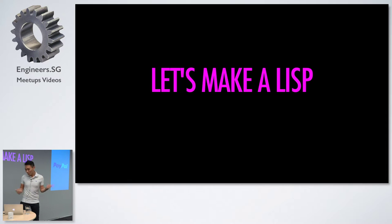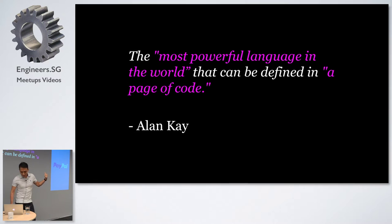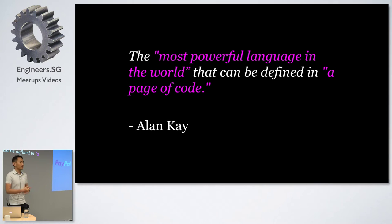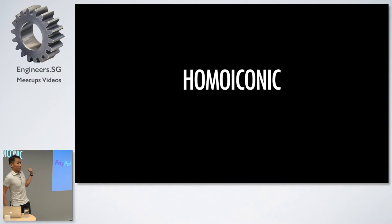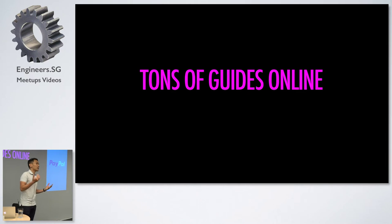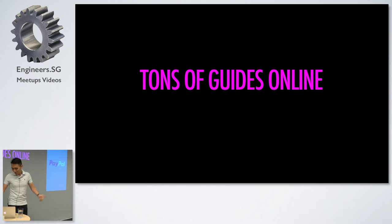Why are we implementing Lisp? It's because it's actually super easy to implement. Alan Kay said this is the most powerful language in the world that can be defined in a single page of code. It's very easy to lex and parse. In many other languages you need special tools, lots of regexes, you have to define grammar rules — it's really complicated. But for Lisp it's very simple because the code is the data you want to represent in memory. Some people call this homoiconic. And writing a Lisp is like some kind of rite of passage for most programmers.